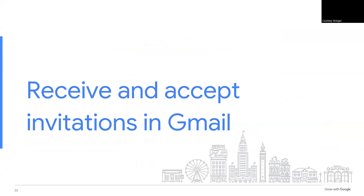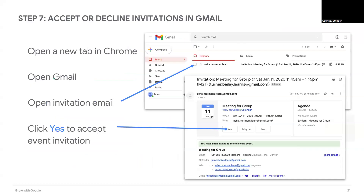Now that we've created a new calendar and created a new event, let's walk through how to receive and accept invitations in Gmail. In a new window or tab, open Gmail to see your inbox. You may have a calendar invitation from work, friends, family, etc.